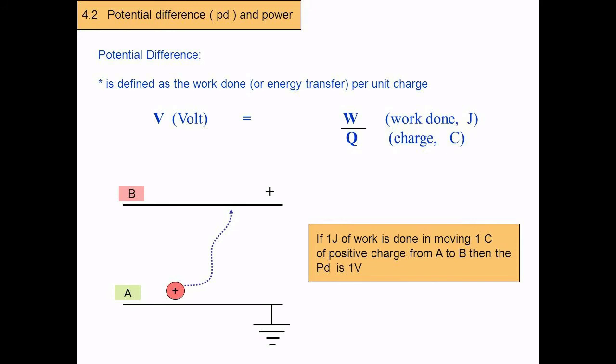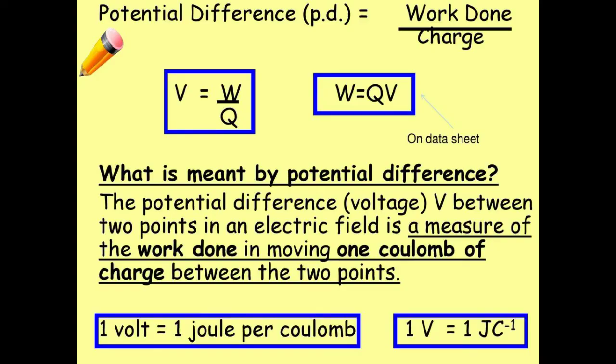Then V = V_B - V_A if V_B > V_A. Volt. The SI unit of electric potential or potential difference is volt, V. The potential difference between two points is one volt if one joule of work is done in moving one coulomb of charge from one point to another against the electric force. One volt is equal to one joule per one coulomb.